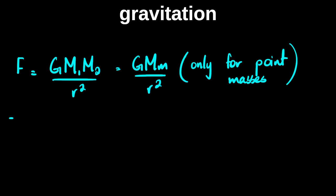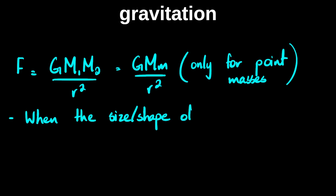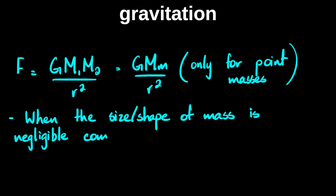We take the point mass assumption when the size or shape of the mass is negligible compared to the distance between the masses.